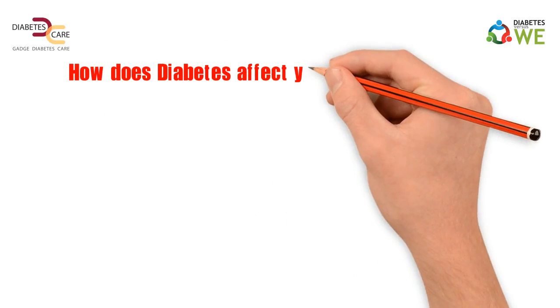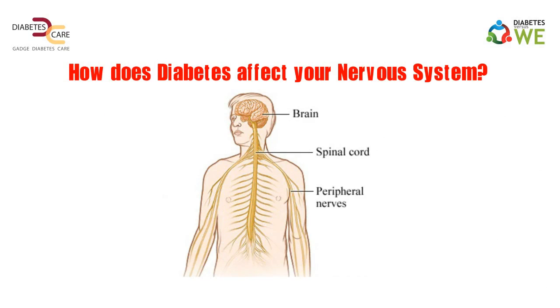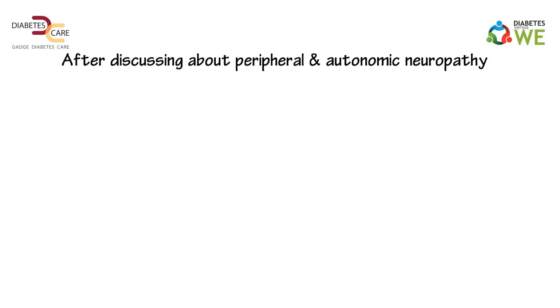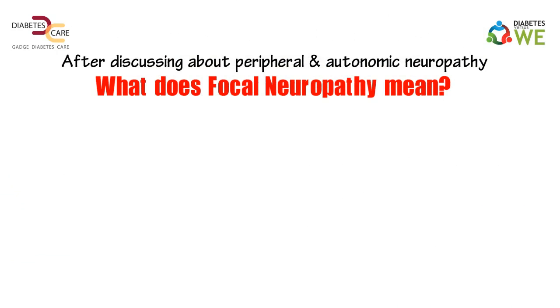How does diabetes affect your nervous system? After discussing peripheral and autonomic neuropathy, let's understand what focal neuropathy means.